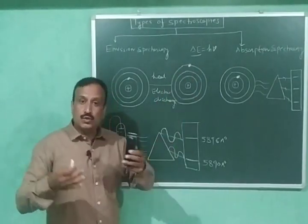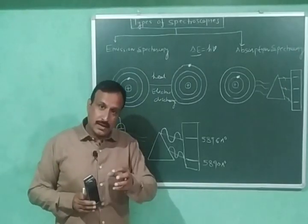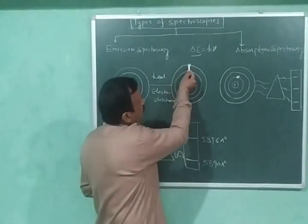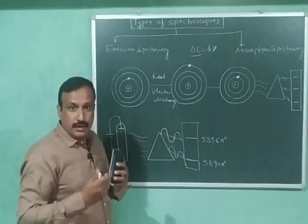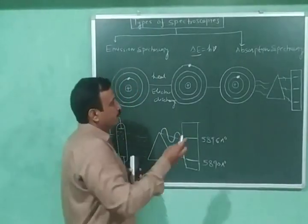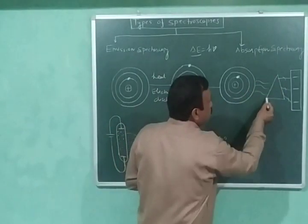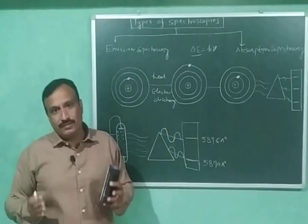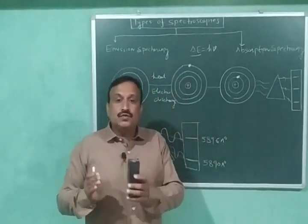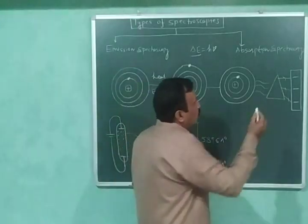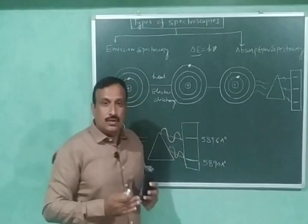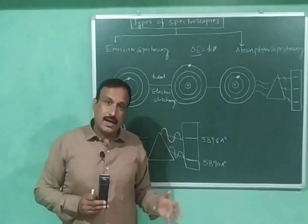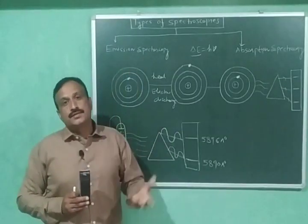Then this electron will come back to its ground state. During its return journey, it has to emit the energy it gained in the first step. It emits that energy in the form of light or radiations, and this light is then passed through a prism. The prism disperses the radiations into different wavelengths. The light coming out of the prism falls on a photographic plate, where we observe bright lines on a dark background — these bright lines are called the emission spectrum of the substance.